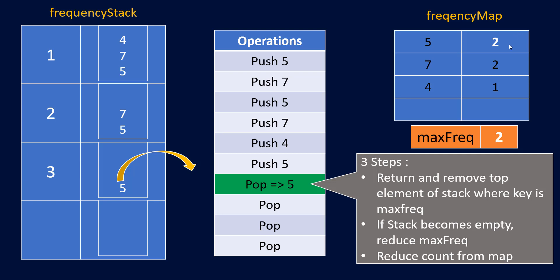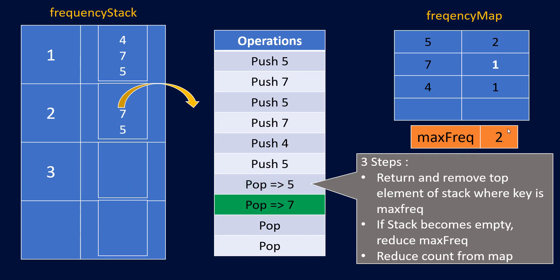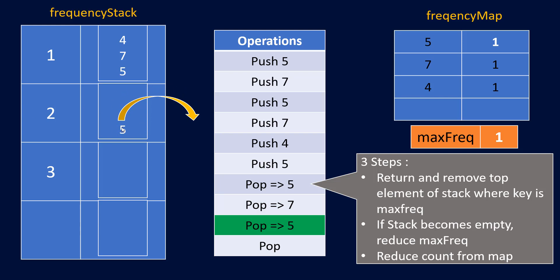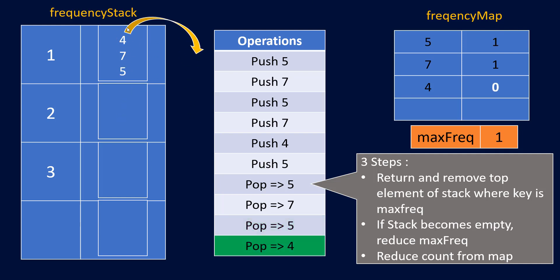In the second pop, max frequency is 2 and 7 is at the top of that stack, so 7 is returned and its frequency map value decremented. In the third pop, 5 is at the top of frequency stack key 2, so 5 is popped; the stack at key 2 becomes empty so max frequency decrements to 1. In the fourth pop, 4 is popped from key 1; since there are still elements at key 1, max frequency remains 1.